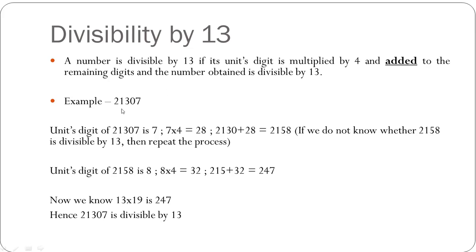Let us look at the example of 21307. The units digit is 7. You multiply this by 4 and get 28. Next you add this 28 to the remaining digits, which is 2130, and you get 2158. We're not sure yet whether 2158 is divisible by 13, so we repeat the process. The units digit of 2158 is 8; multiply by 4 to get 32. Then add 32 to the remaining digits, 215, and 215 plus 32 gives 247. Since 13 times 19 is 247, the number 21307 is divisible by 13.